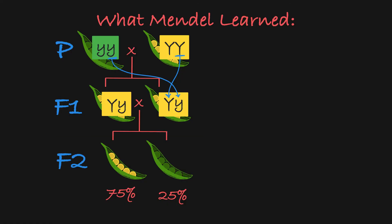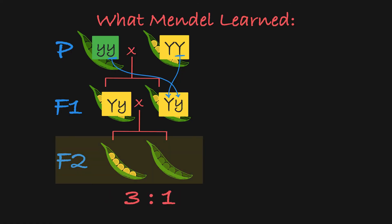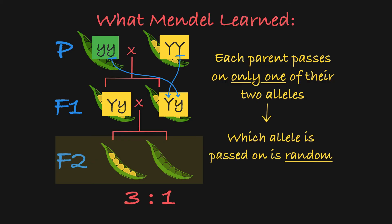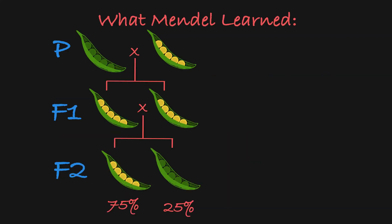Finally, given the 3 to 1 ratio of yellow to green offspring in this F2 generation, Mendel inferred that each parent passes on just one of their two alleles to their offspring, but which of these two alleles the parent passes on is random. So in the P generation, this yellow pea plant is homozygous for the dominant yellow allele, and this green pea plant is homozygous for the recessive green allele.